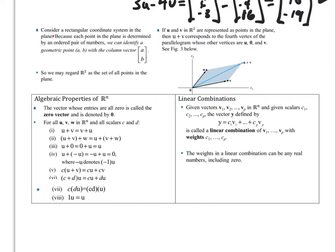So in a more formal situation with R2, we can consider a rectangular coordinate system in a plane. Because each point is determined by an ordered pair of numbers, we can identify the geometric point with the column vector. And so we may regard R2 as a set of all points in the plane. So if we use u and v in R2, then if we do u plus v, to the fourth vertex of the parallelogram for which the vertices are u, 0, and v. So this is the tip-to-tail thing. So if I put the u here, I can take this vector, slide it up here, and add the two togethers, which is the resultant here of u plus v. And that's the same as just adding the respective components together.